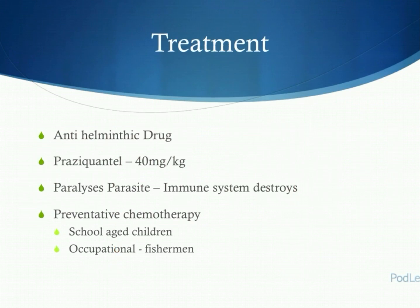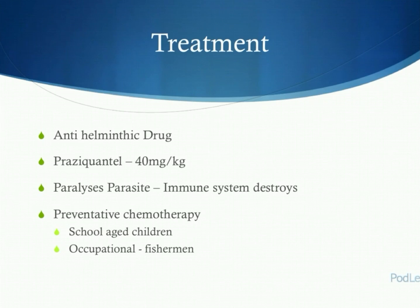Treatment is very simple — a one-off dose of an antihelminthic drug known as praziquantel. The dose is 40 milligrams per kilogram, although it can be calculated using a dose pole for height if the child is under 5 years old. The treatment works by paralysing the parasite, flushing it out from its hiding place where it becomes known to the immune system and is subsequently destroyed. Treatment can be given to individuals who are positive for the disease, identified through ova in their stool or urine, or also administered via preventative chemotherapy to at-risk groups such as school-age children, fishermen, or rice paddy farmers.